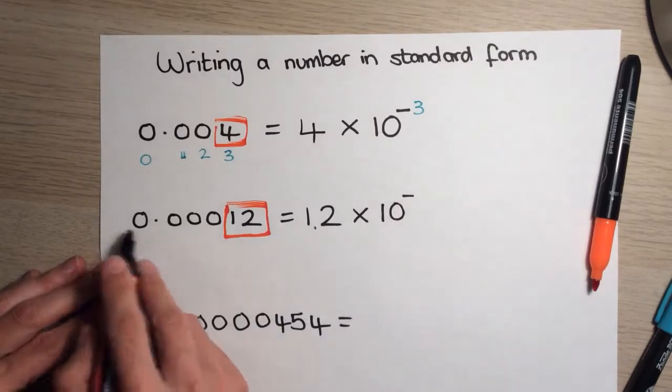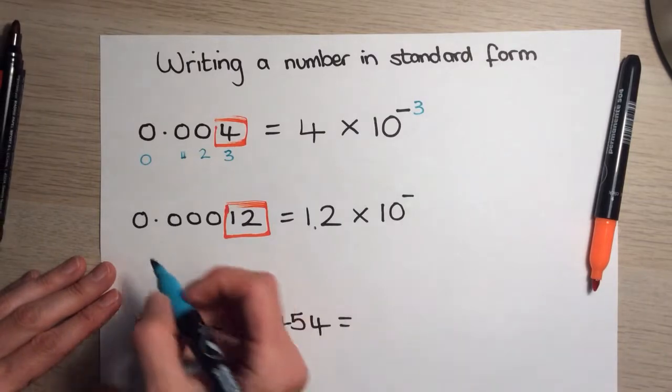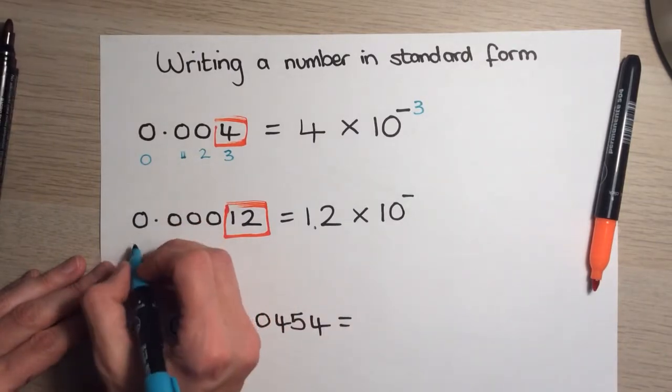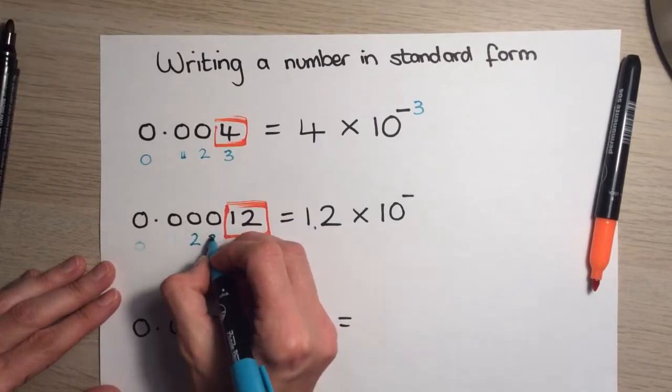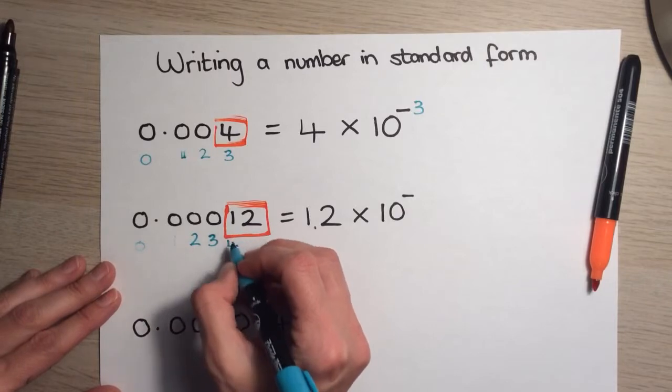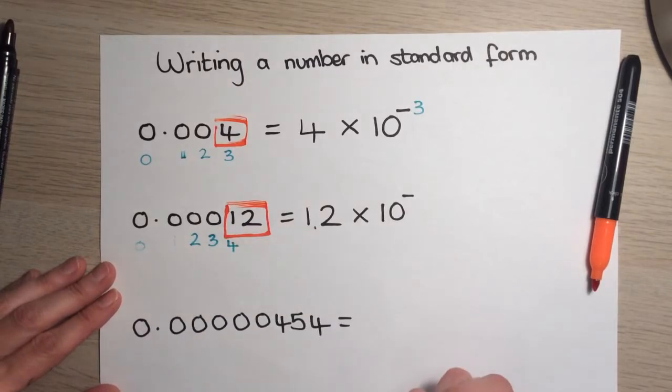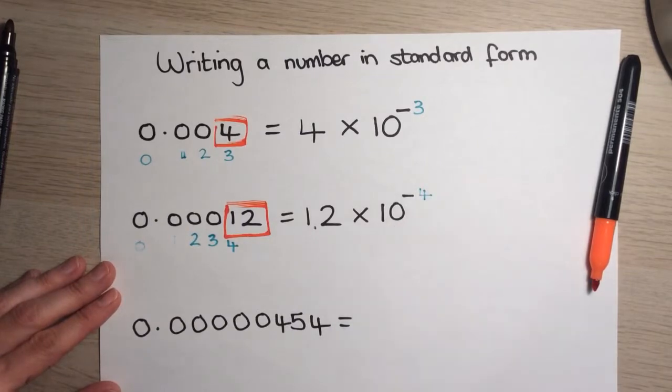10 needs to be negative because the number is less than 1. And then I'm going to start counting again, starting from here again. 0, 1, 2, 3, 4. And I stop when I get to the first digit. And then I transfer that here.